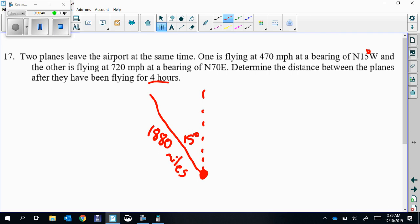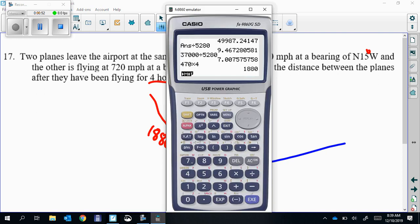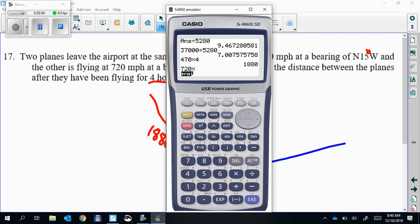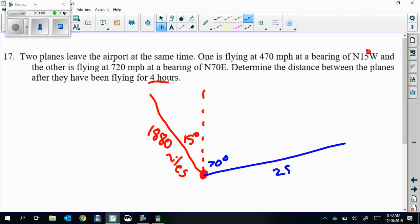The other one going 720 miles per hour at a bearing of north 70 degrees towards the east. So this angle right here is 70. 720 miles per hour times four hours. Interesting, kind of the same number.